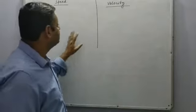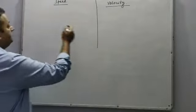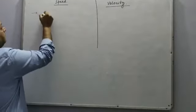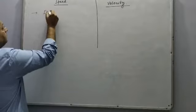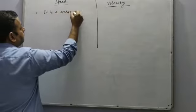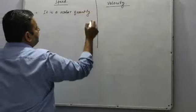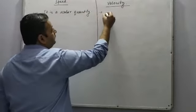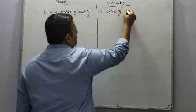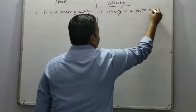Friends, today we are going to discuss the differences between speed and velocity. The very first difference is: speed is a scalar quantity, whereas velocity is a vector quantity.